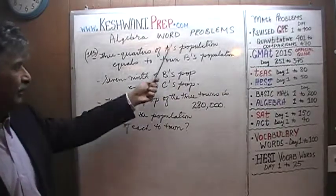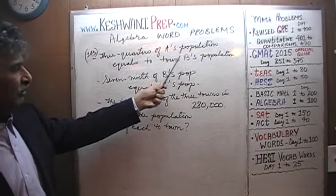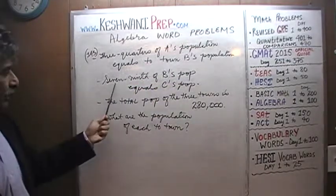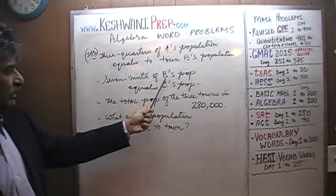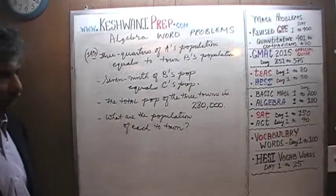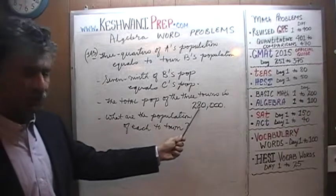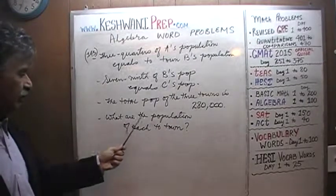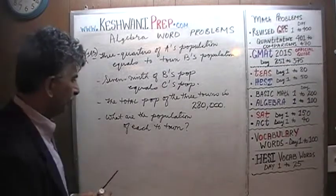We have three towns: A, B, and C. Three quarters of A's population equals B's population. We are further told that seven ninths of B's population is C's population. The total population of the three towns is 280,000. The question simply is: what are the populations of each town?